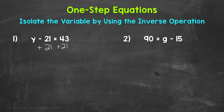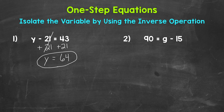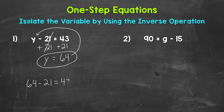Now let's take a look at the left side of the equation. We are subtracting 21 and adding 21. So these 21s cancel out. They equal 0. So our variable y is now isolated. It's by itself. So y equals, and then on the right side of the equation, 43 plus 21 equals 64. So y equals 64. That's our solution. Now we can always check a solution by plugging it into the original equation. So let's plug 64 in for y and see if this works. 64 minus 21 equals 43. 64 minus 21 does equal 43. So we have the correct solution. y equals 64.